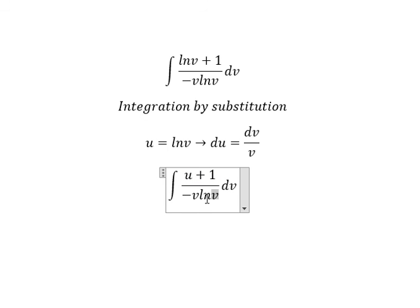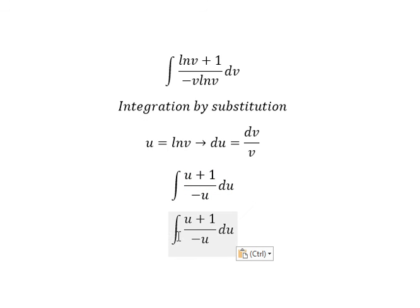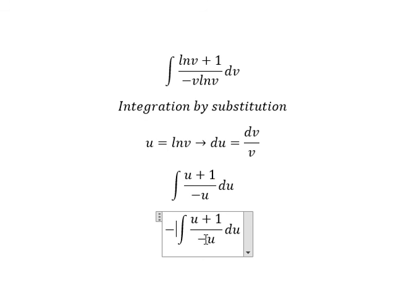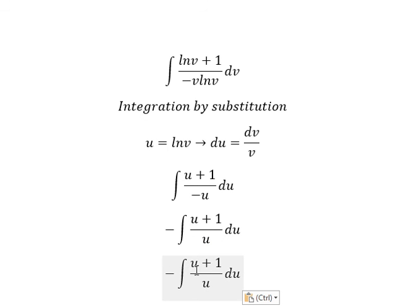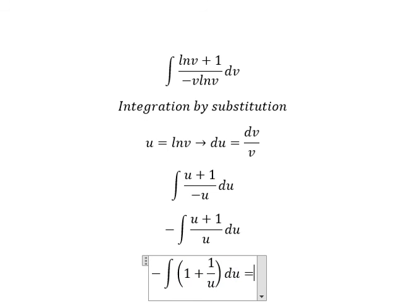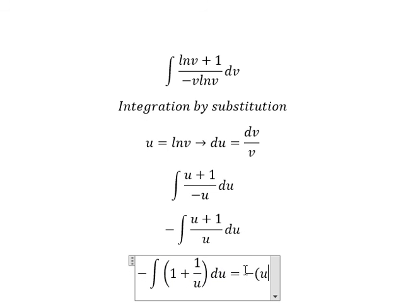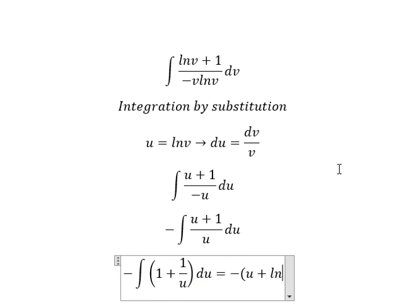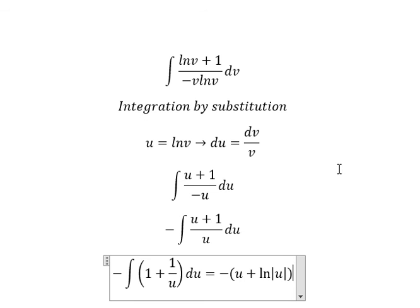We change LN v by u, and dv over v we change by du. I will put the negative outside. We have u divided by u plus 1 divided by u, so we get 1 plus 1 over u. The integral of 1 gives u, and the integral of 1 over u gives LN of the absolute value of u. We add constant C, and u is LN v.